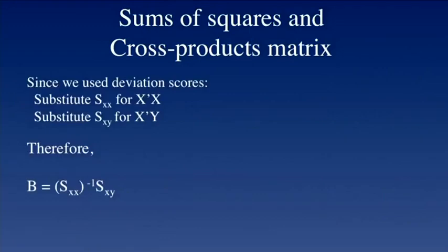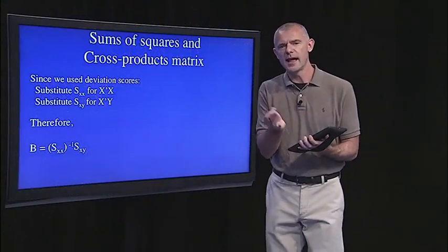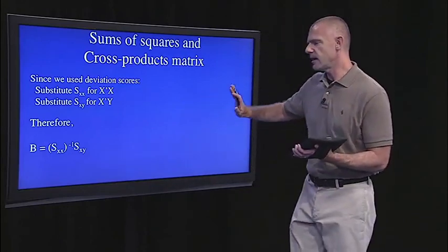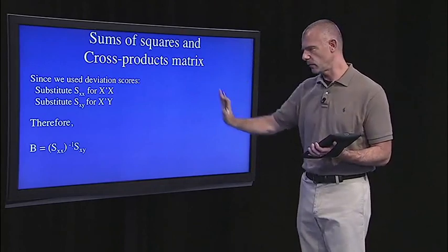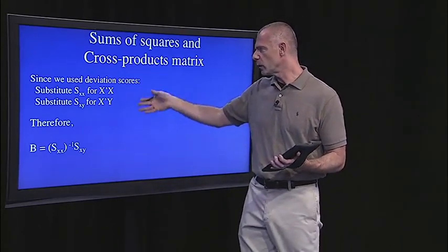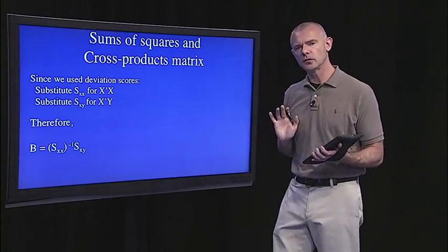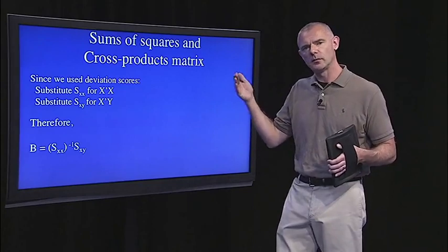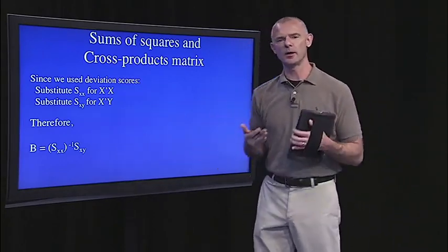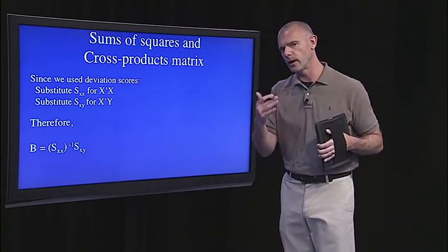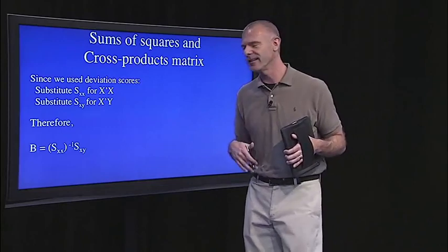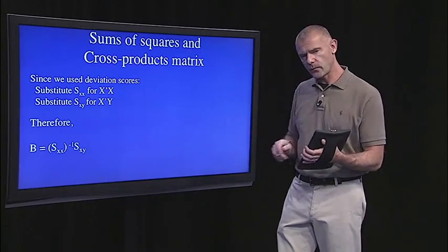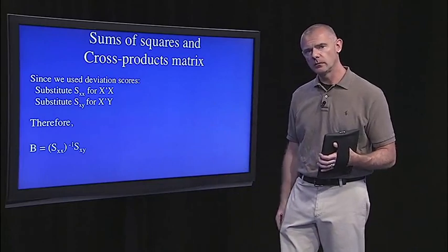We have the sum of the squares and we have the cross products. Since we have all of this in deviation form, the work is done for us. Let's take that equation for the matrix B. Since we use the deviation scores, we can just put in sum of squares X for X transpose X, and we can put in the cross products for X transpose Y. It would take us some time for me to walk you through the proof of that, so just trust me for now. But it's a quick substitution and it saves us some time. So now the formula becomes this simple calculation.